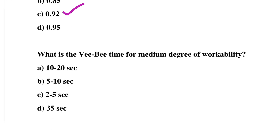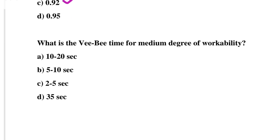So next question: what is the VB time for medium degree of workability? Option A: 10 to 20 seconds, option B: 5 to 10 seconds, option C: 2 to 5 seconds, option D: 35 seconds. So the correct answer is option C, 2 to 5 seconds. We will see more in the next video, thank you.